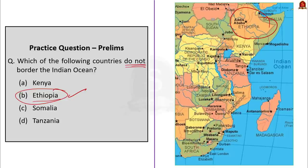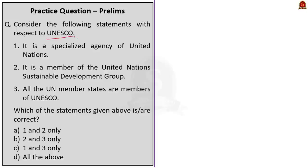The next question is based on UNESCO. Statement one: it is a specialized agency of the United Nations — this is correct. Statement two: it is a member of the United Nations Sustainable Development Group. UNESCO seeks to build peace through international cooperation in education, sciences, and culture, so it is a member of the UNSDG — a coalition of UN agencies aimed at fulfilling sustainable development goals. Statement two is correct. Statement three: all UN member states are members of UNESCO. However, UNESCO has 193 members and 11 associate members, and three UNESCO member states are not UN members — Cook Islands, Niue, and Palestine — while three UN member states are not UNESCO members: Israel, Liechtenstein, and the United States. This makes statement three incorrect. The correct answer is option A, one and two only.